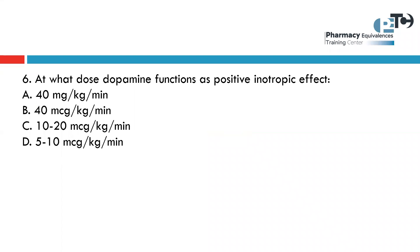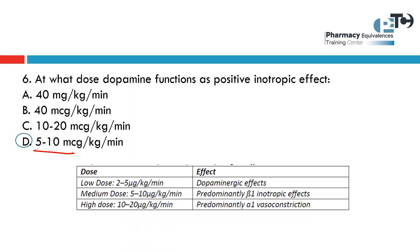At what dose does dopamine function as a positive inotropic effect? We have three doses of dopamine, each with a specific function. The lower dose acts as a diuretic, the median dose acts as a positive inotropic effect, and the large dose acts as a vasoconstrictor. So the median dose of dopamine is needed, which is 5 to 10 micrograms per kg per minute.